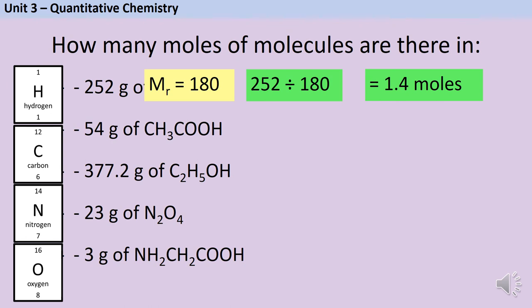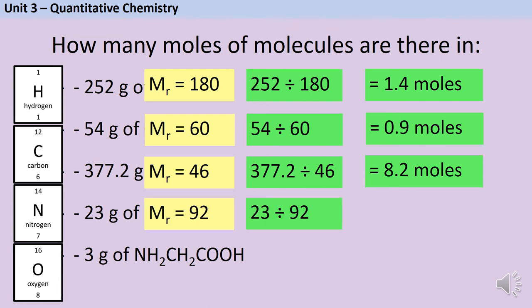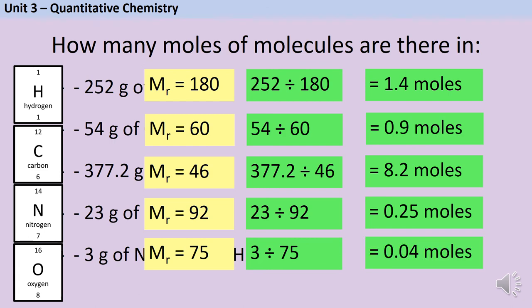Pause the video and have a go at the next four. So the ethanoic acid has a relative formula mass of 60, and 54 divided by 60 is 0.9 moles. The ethanol has a relative formula mass of 46, and 377.2 divided by 46 is 8.2 moles. Then we've got 92, and 23 divided by 92 is 0.25 moles. And finally, glycine has a relative formula mass of 75, which means our sample contains 0.04 moles.